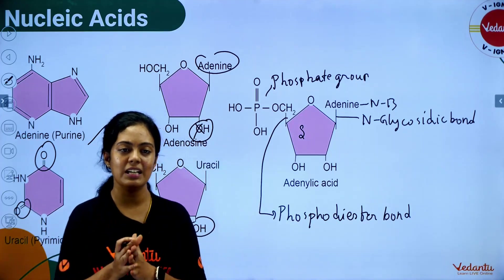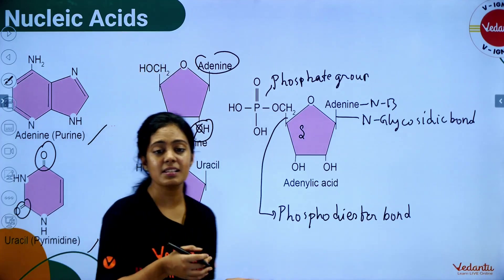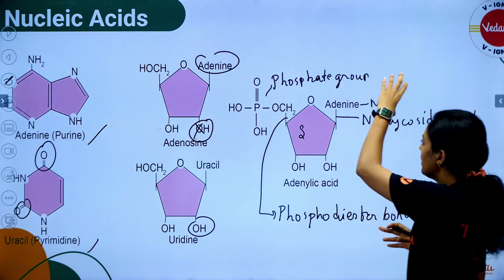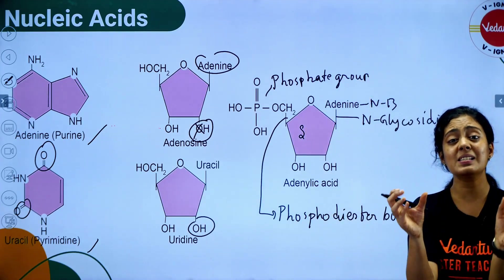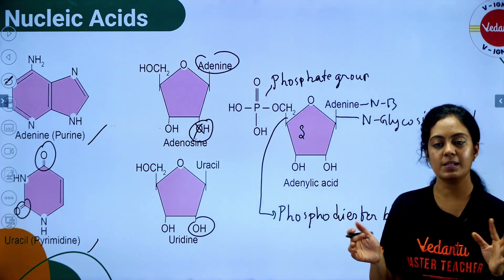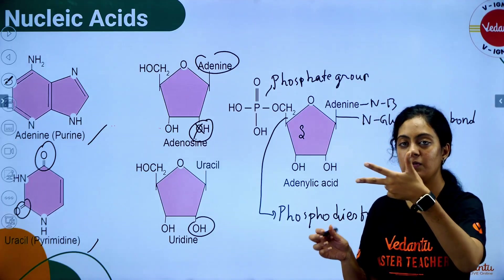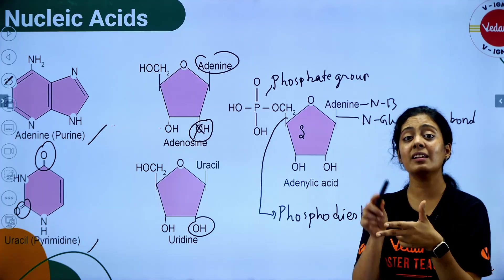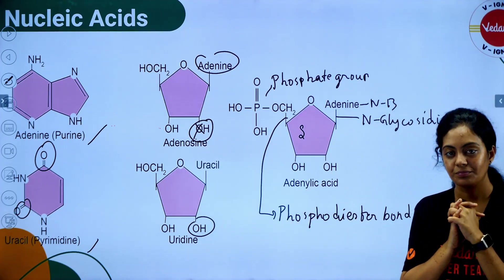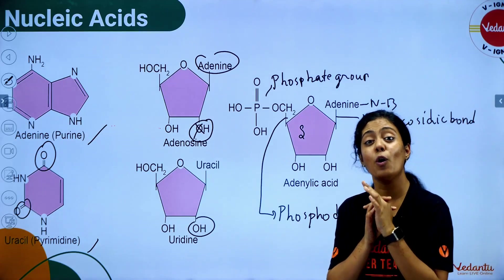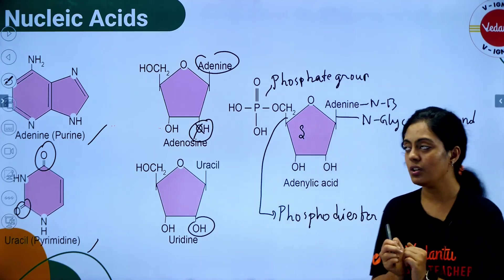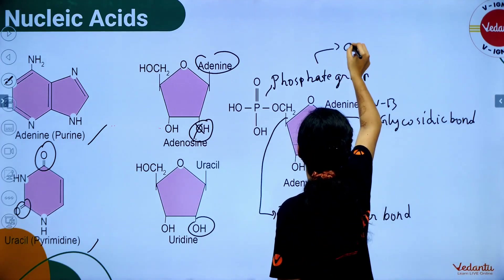What is the nature of DNA chemically? It is an acid. Out of the three components — sugar, base, and phosphate — it is the phosphate group that gives the acidic character to nucleic acids. The phosphate group is responsible for the acidic character and makes DNA negatively charged.